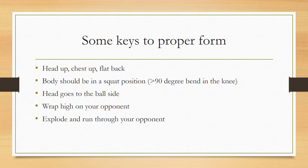Some keys to a proper tackle: ideally you want to see the athlete with their head up, chest up, and flat back — this helps prevent head, neck, and spinal injuries. We also want to see the athlete go to about or greater than a 90-degree bend in the knee. The head wants to go to the ball side, which will help increase the defensive player's chance to force a fumble. As the defensive player hits their opponent, we're teaching them to wrap high, which allows the athlete to better explode and run through their opponent.